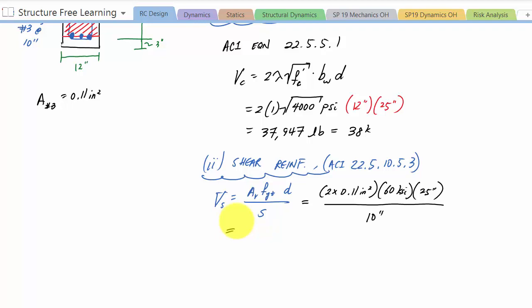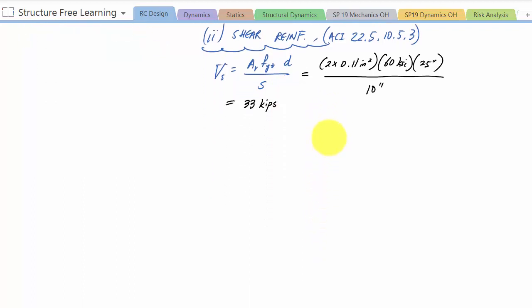But since there's no square root of fc prime and everything, and I can keep my units straight in my head, that's why I use 60 ksi. But here this is 33 kips like this. And then now I combine everything into my design shear strength, and here phi vn is phi times Vc plus Vs.